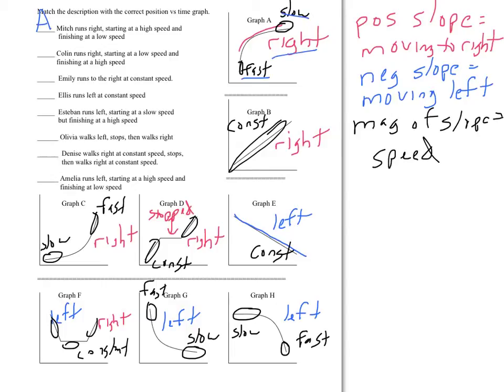Colin runs right from low to high speed. You're looking for one that's right from slow, low to high, and that's going to be graph C. Emily runs right at constant speed. That's going to have to be graph B. Ellis runs left at constant speed. That's going to have to be graph E.